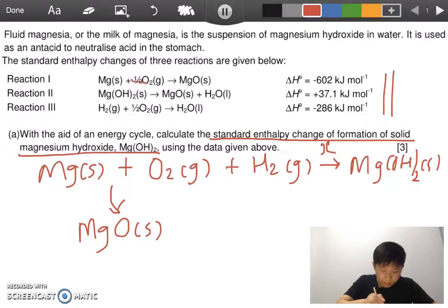But remember we only use half of the O2 because can you see over here only half of the O2. And then we put in the value here so it's minus 602. Whenever you finish the equation we tick it, done.